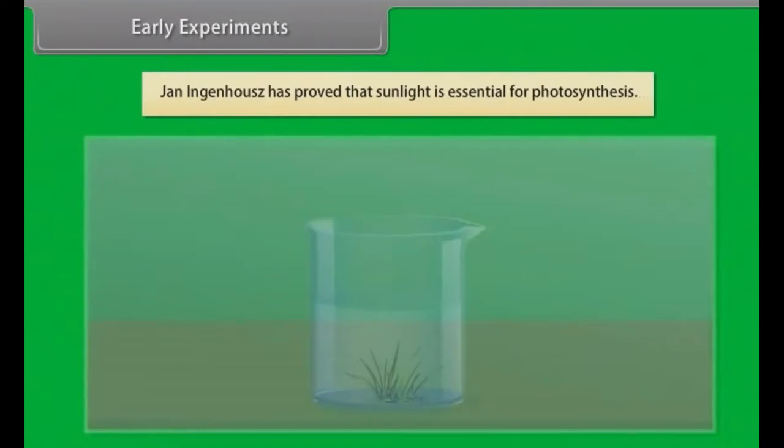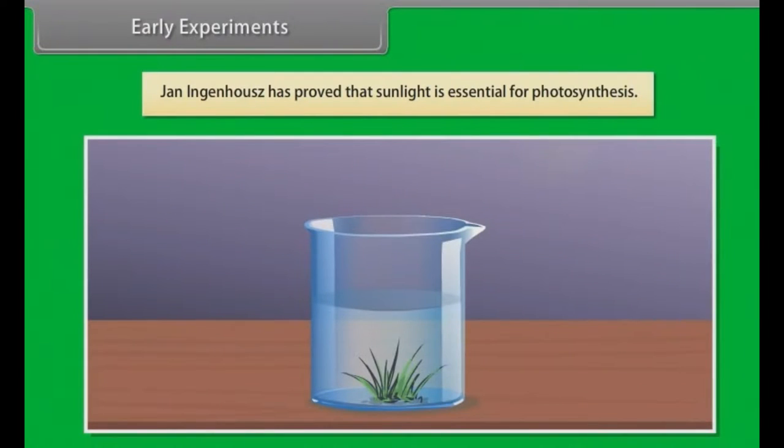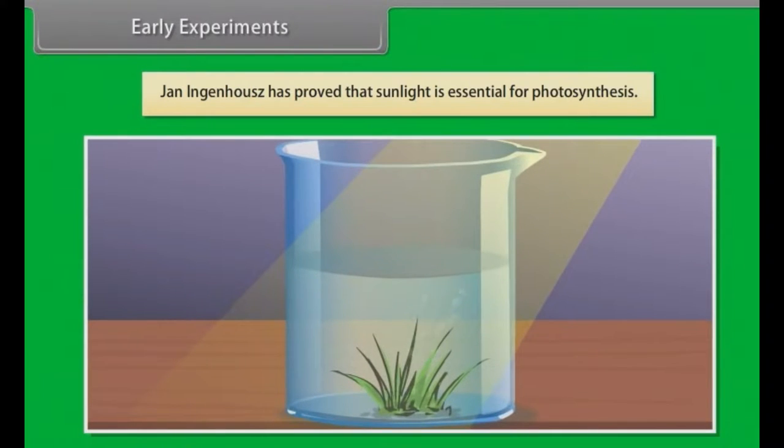Early Experiments: Jan Ingenhousz proved that sunlight is essential for photosynthesis. He experimented on aquatic plants that in the presence of sunlight, there are small bubbles around the green parts of the plant and in the absence of sunlight, no bubbles were formed. These bubbles were found to be of oxygen.